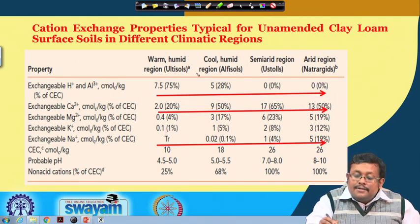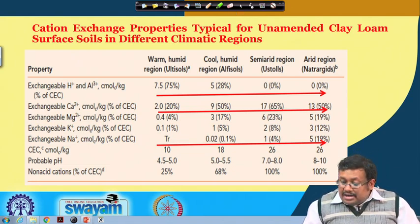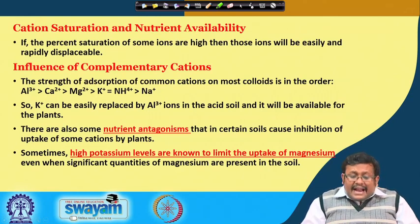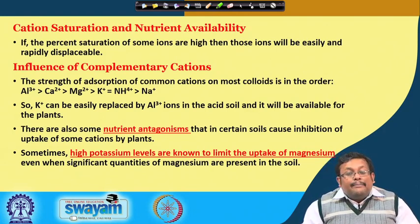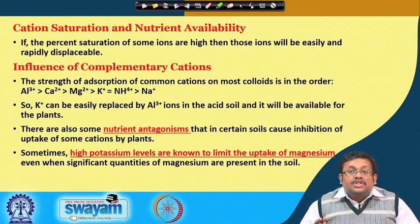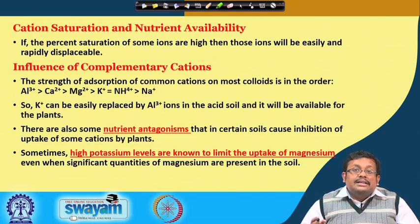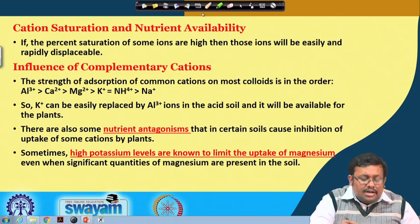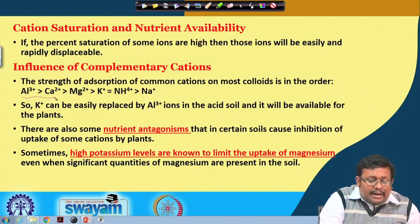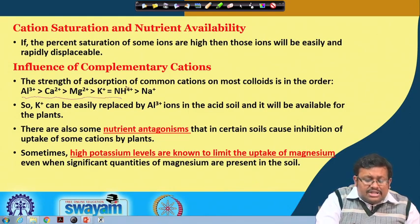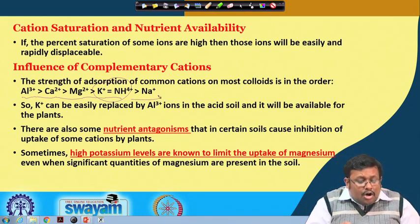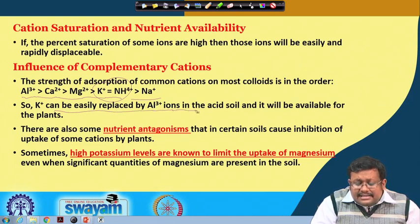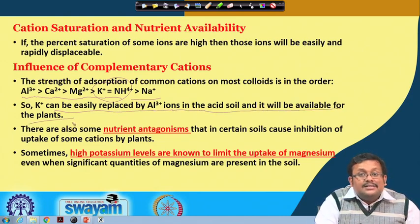This shows the importance of climate for soil development, as discussed in earlier lectures. Regarding cation saturation and nutrient availability, if the percent saturation of some ions is high, those ions will be easily and rapidly displaceable. The strength of adsorption of common cations on most colloids generally follows this order: aluminum is strongly adsorbed, followed by calcium, then magnesium, then potassium (showing similar adsorption capacity), and further more than sodium. Potassium can be easily replaced by Al³⁺ ions in acid soil and will be available for plants.